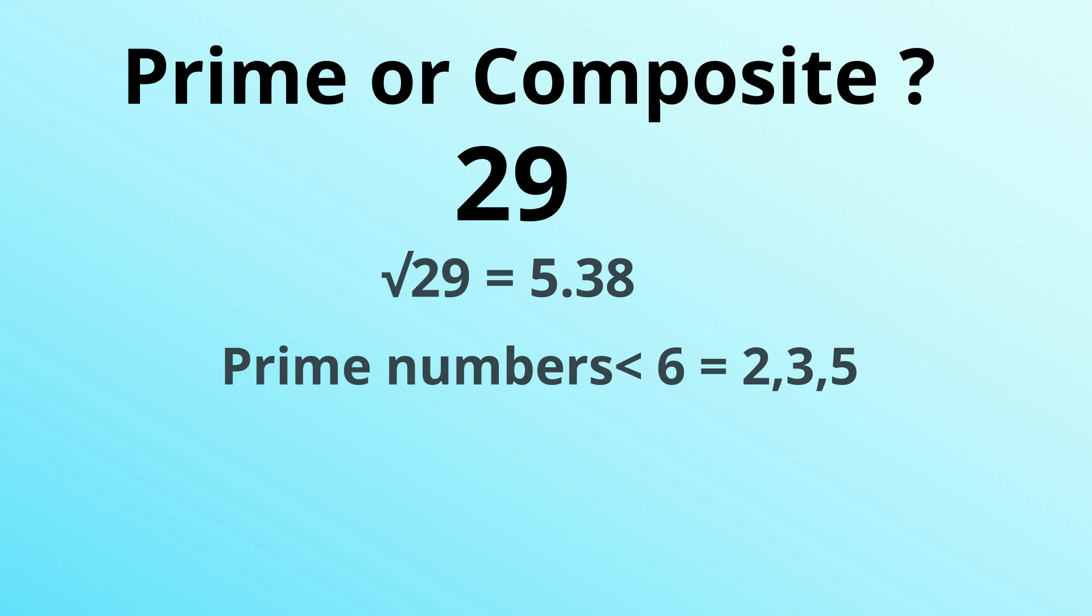We can eliminate 2 and 5 by looking at the ones digit because 9 is not even, nor is it 0 or 5. So we just have to check the number 3. And 29 divided by 3 equals 9.66, so it is prime.